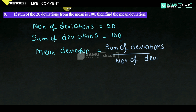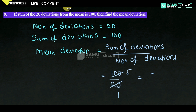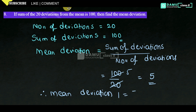Whatever is in the denominator will be the number, and above that will be the sum. That is 100 by 20. Therefore, mean deviation will be equal to 5.